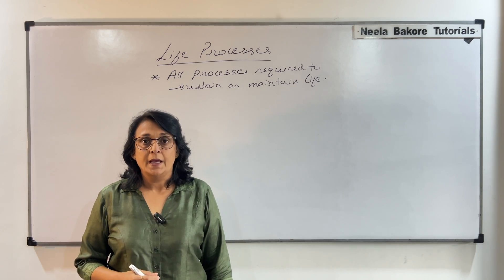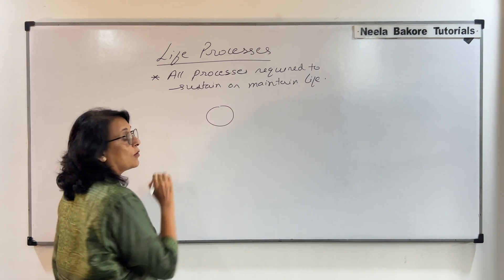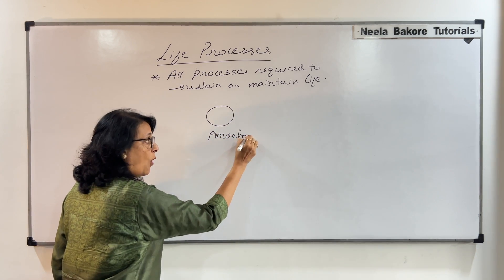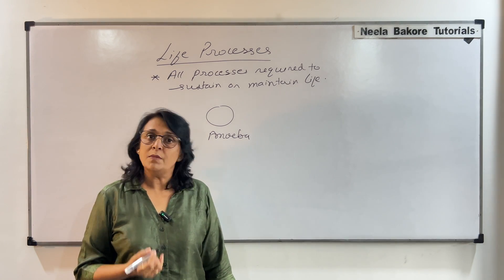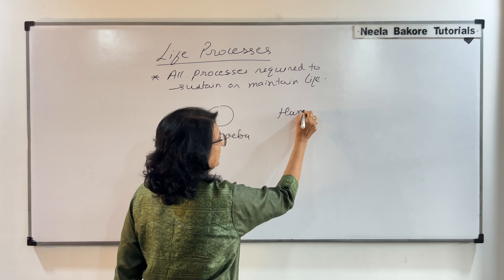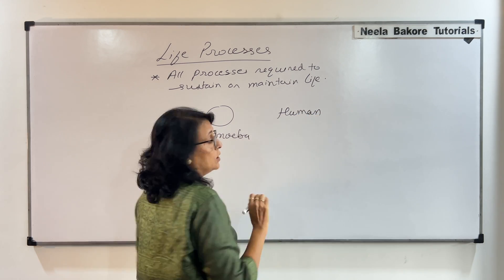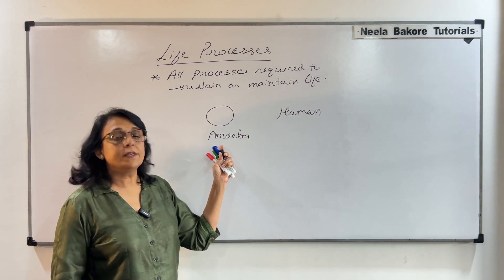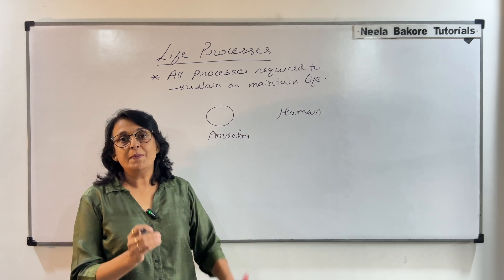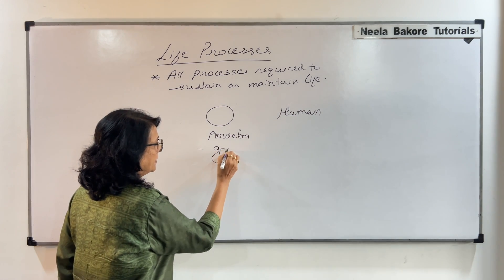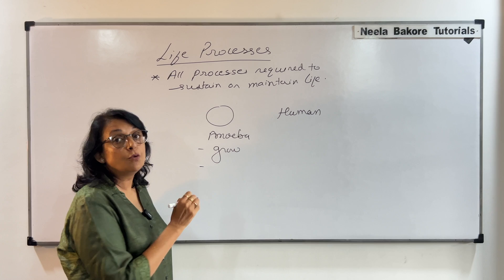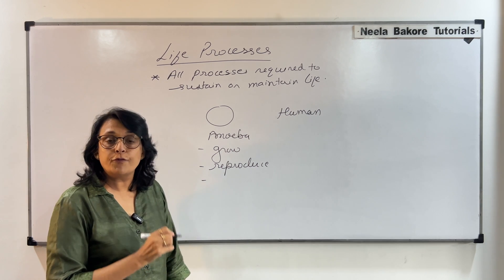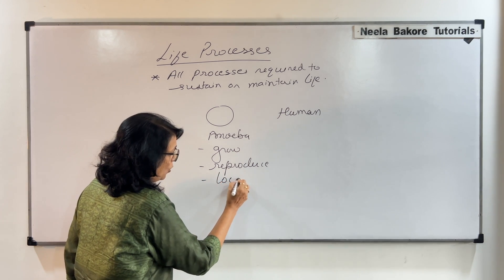Let us take an example. Say there is a cell — a unicellular organism like amoeba, or there is a multicellular organism like a human. So there are two categories. What will this amoeba do in its life? Amoeba is going to grow, it is going to reproduce, and it is going to move from one place to another — that means locomotion.